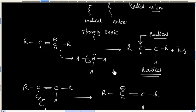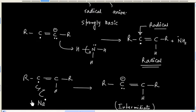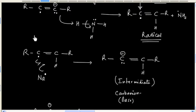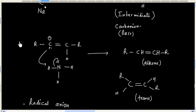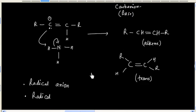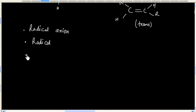Now if you look at the mechanism of this reaction, three intermediates are involved: first is the radical anion, second is the radical, and finally we have the carbanion. So 3 intermediates are involved in this reaction.